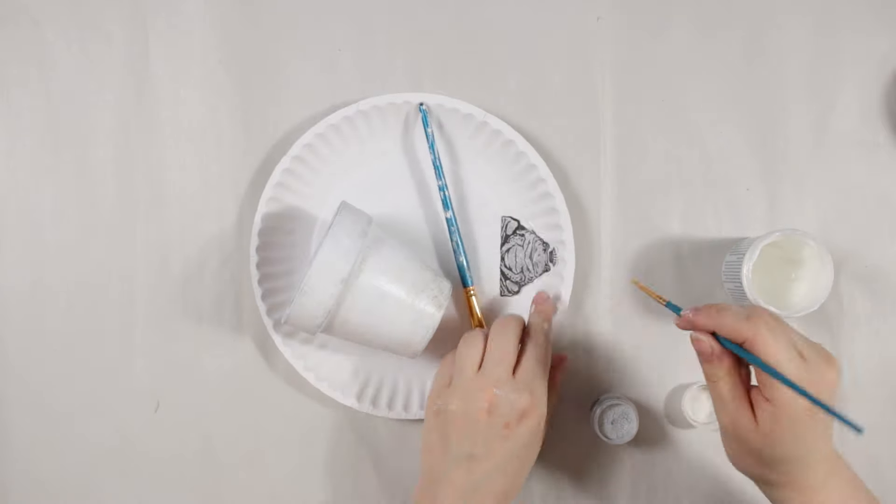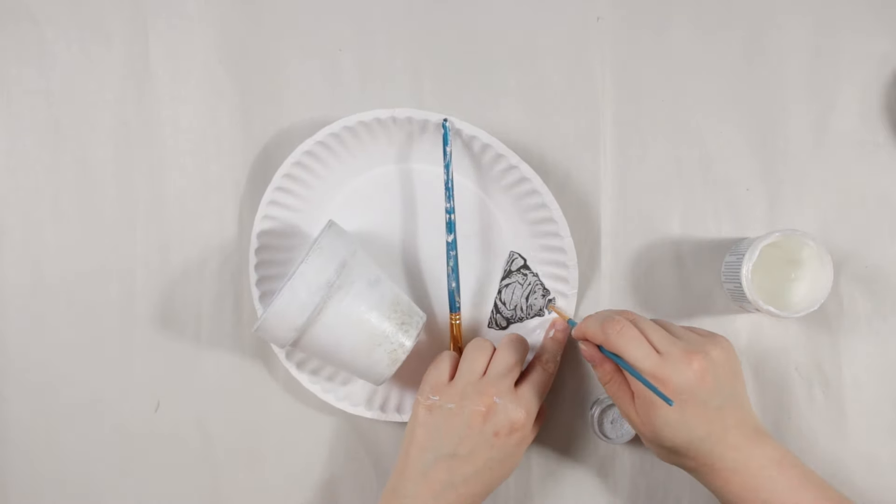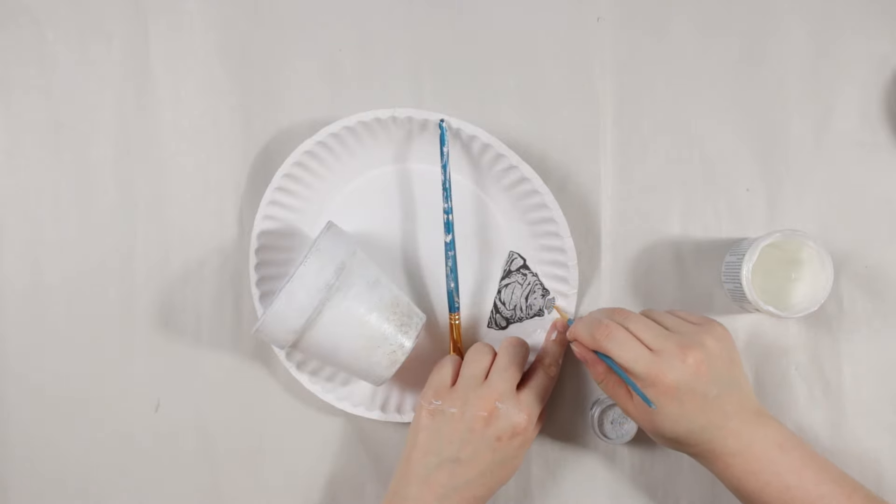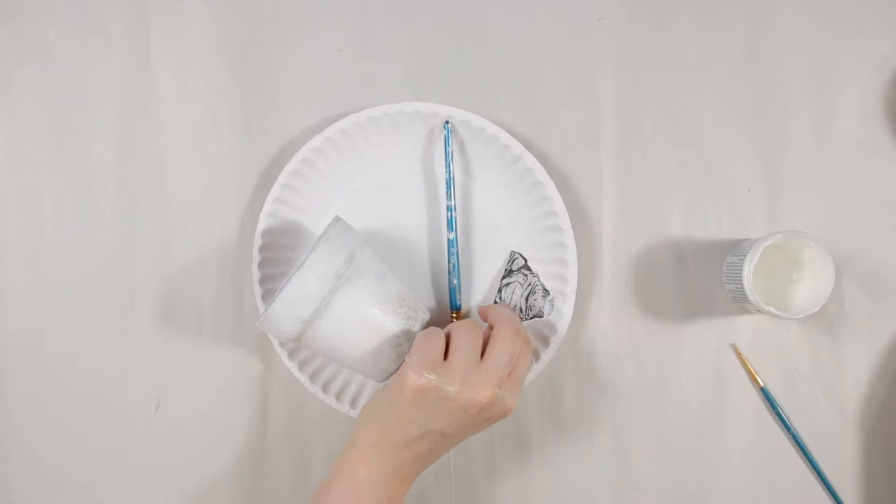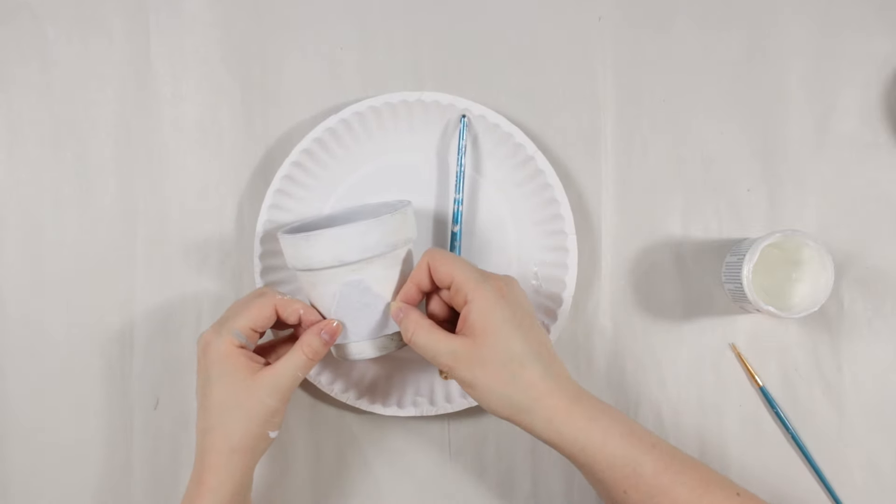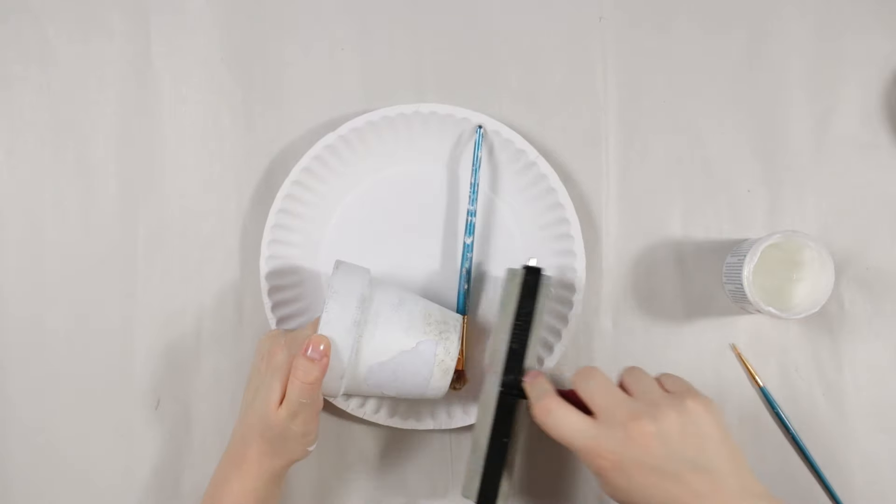I'm just putting a little bit of silver on the crown to add a little extra. When you're ready you're going to be taking your design and placing it face down over where you applied the acrylic medium.